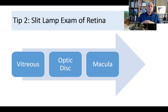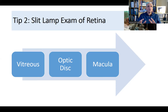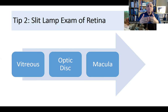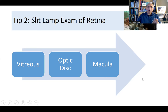Look at the disc for cup-disc ratio, the neuroretinal rim, laminar dot sign, nasalization of vessels, peripapillary atrophy, pallor, swelling, and disc drusen. The cup-to-disc ratio must always be stated. Then examine the macula for pathology — in diabetic retinopathy or maculopathy, look for hard exudates, microaneurysms, and cotton wool spots. Know the difference between cotton wool spots and hard exudates, as you don't want to confuse them in the exam.